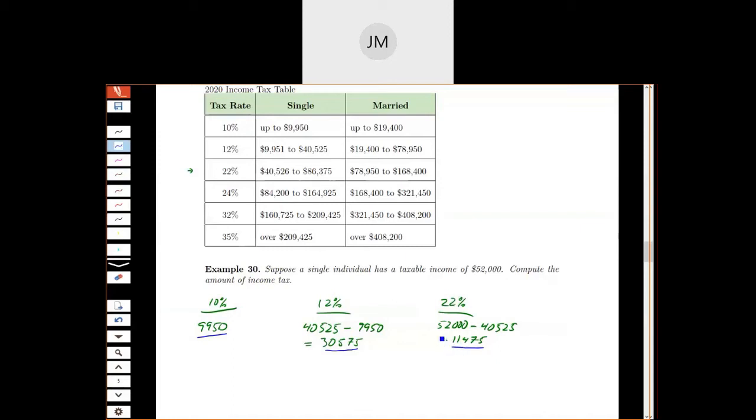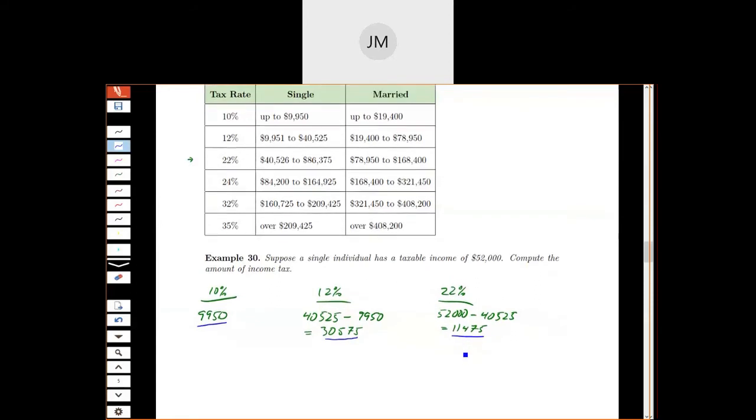So one of the things to keep in mind here is even though this person is in the 22% tax bracket, most of their money is getting taxed at 12%, not 22. Most of it's at 12, some of it's at 10, and some of it's at 22.